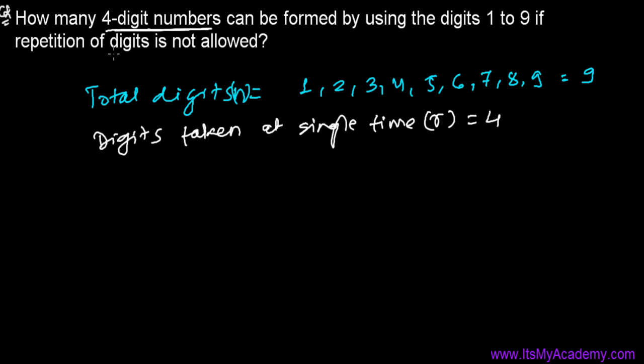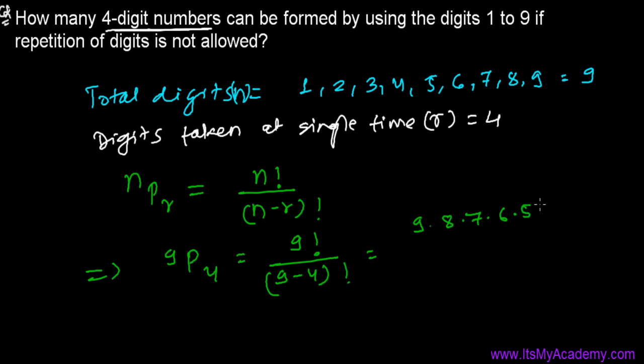First I'm going to solve by the formula and then I will later show you how we can do by the principle of counting also. So we know that total number of arranging n numbers taken r at a single time is n factorial divided by (n minus r) factorial. So here we have n as 9 and r as 4. So it's going to be 9 factorial divided by (9 minus 4) factorial. So it's going to be 9 times 8 times 7 times 6 times 5, and I'm going to stop at 5. Because 9 minus 4 is 5 factorial, and I can cancel this. Now I will get 9 into 8 into 7 into 6.